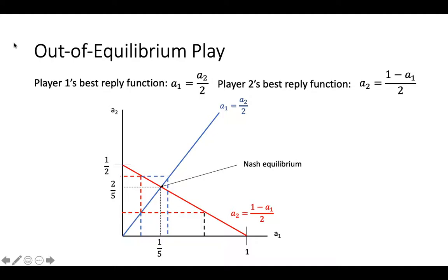This type of convergence to the Nash equilibrium outcome is also often what we see in experiments testing how actual people play these games. This concludes this video on using calculus to solve for the Nash equilibrium of a continuous game. Thank you for watching.